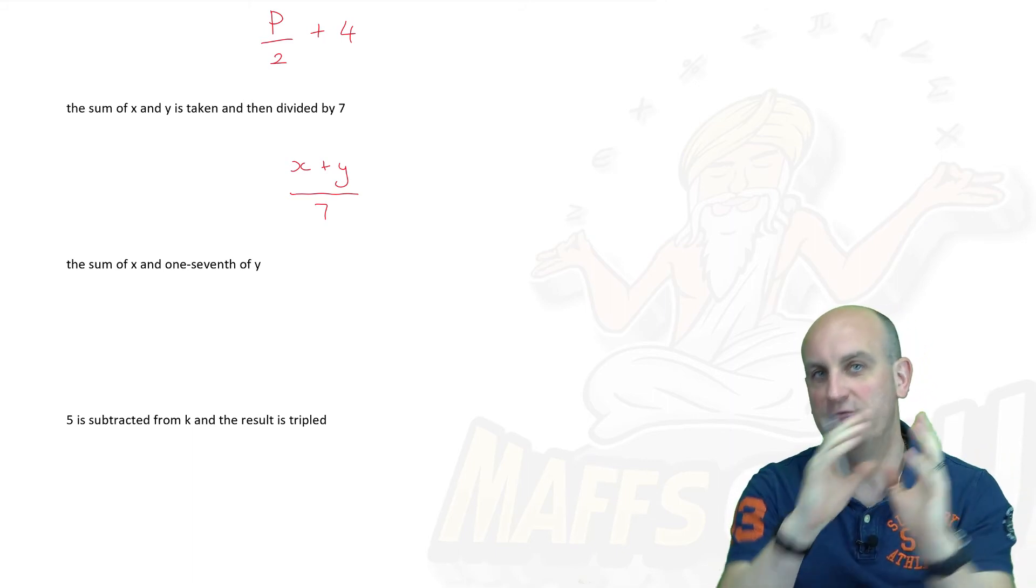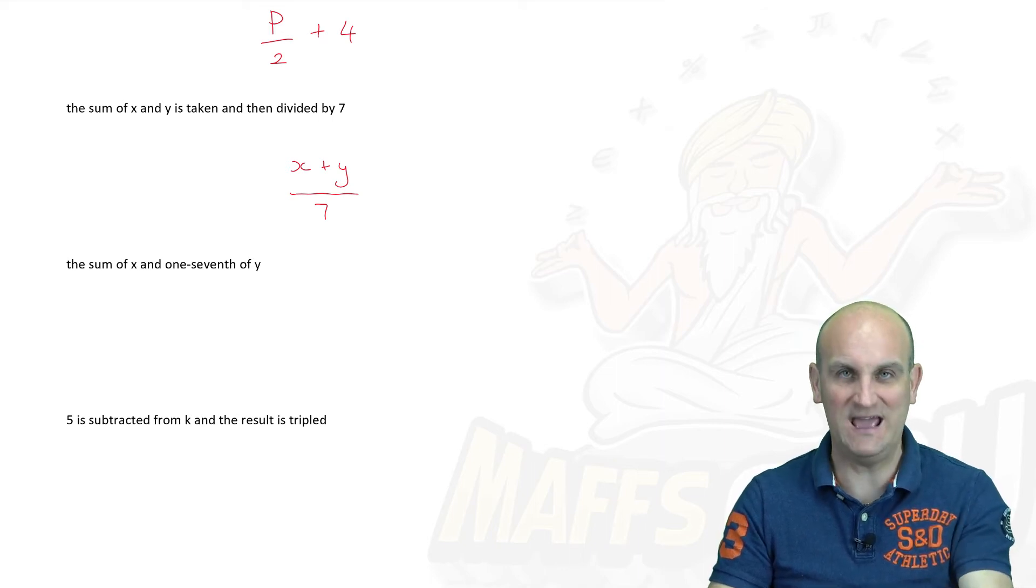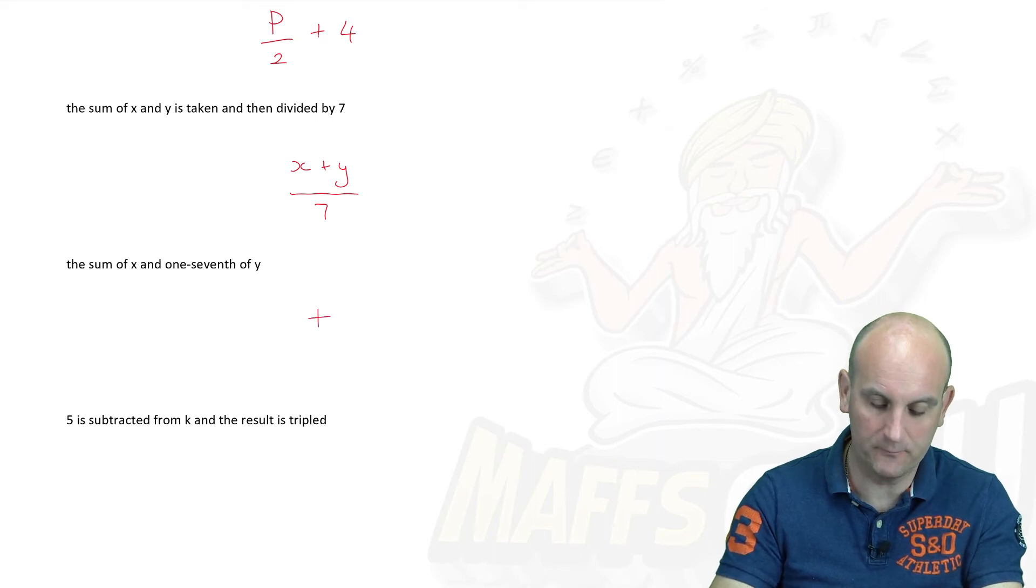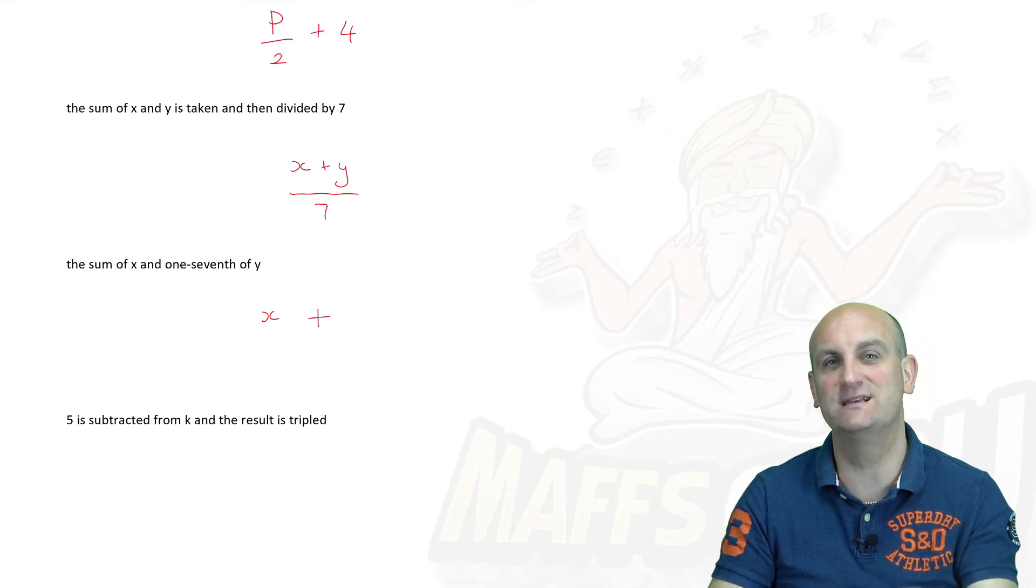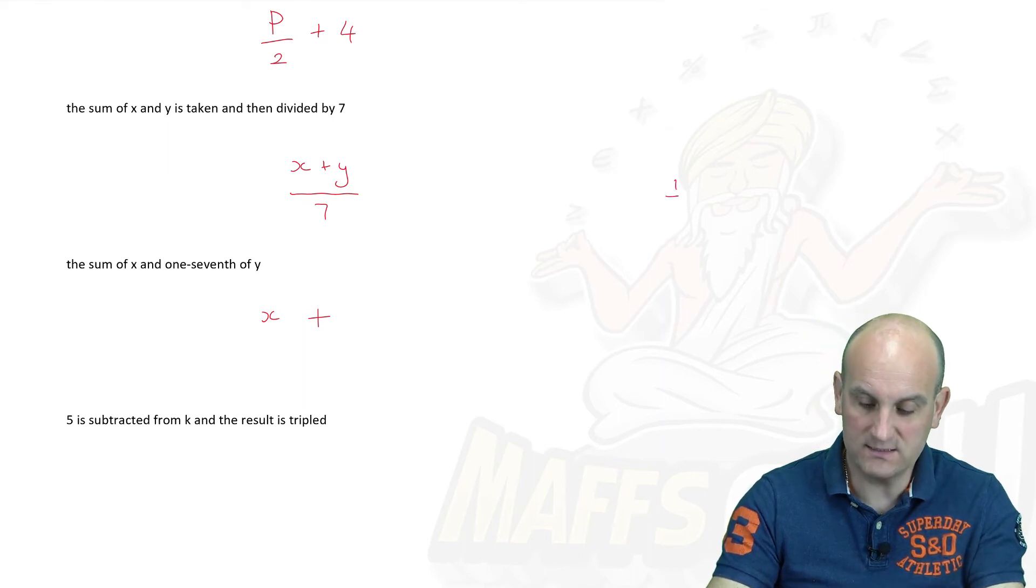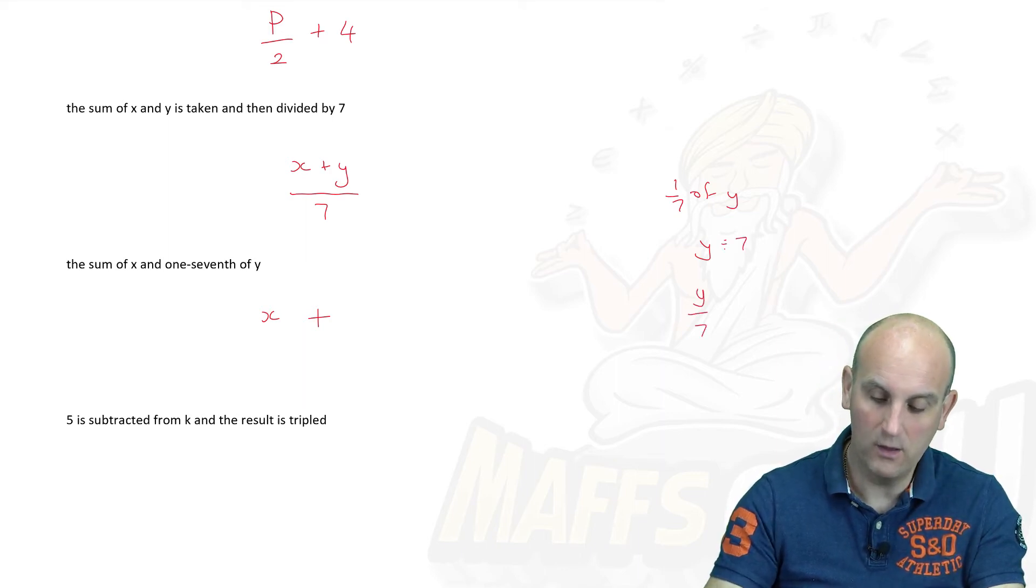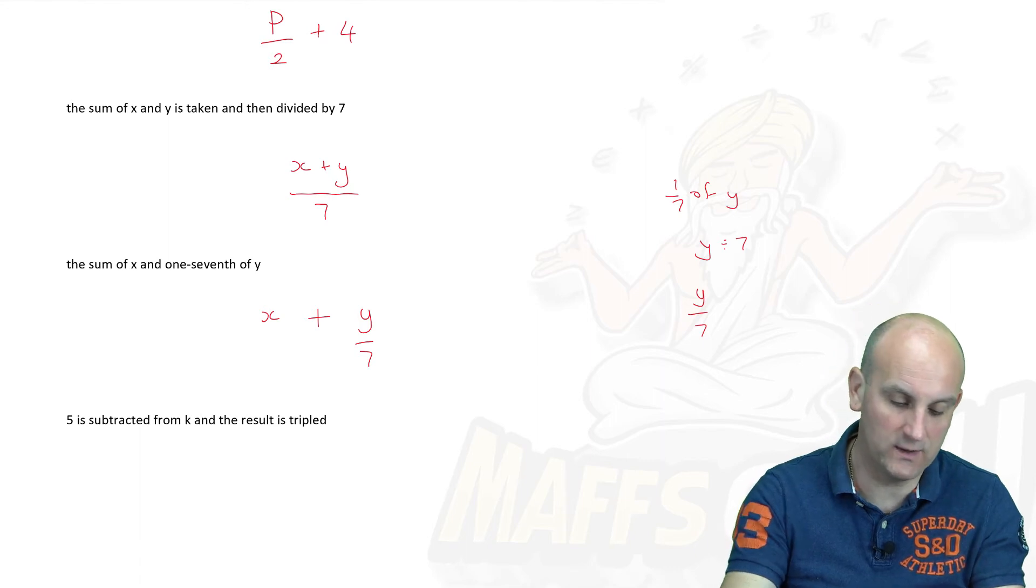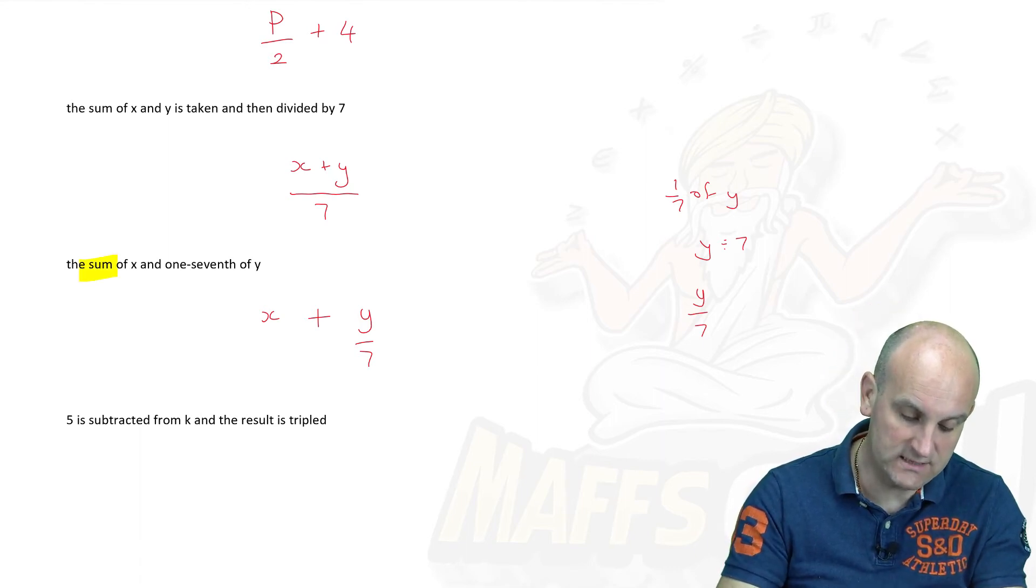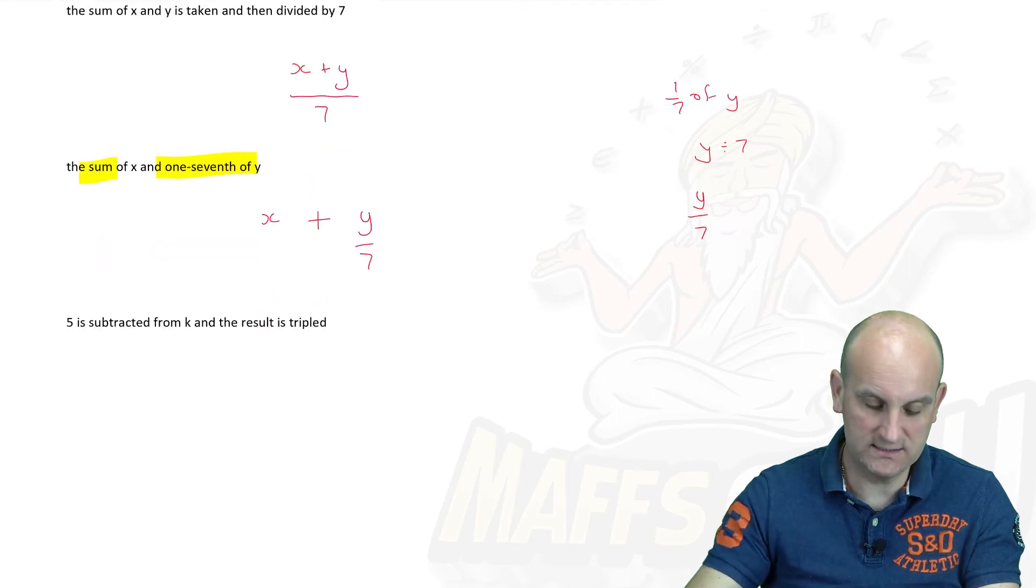The sum of X and 1 7th of Y. Sum of X. Well, there we go. Sum of X and 1 7th of Y. Well, 1 7th is the same as Y divided by 7. So 1 7th of Y is the same as Y divided by 7. But we can't write that. So we have to write Y on 7. Now, why am I not dividing all of that by 7? Because the question quite clearly said we are going to do the sum of X and it's only the Y that is divided by 7. All of these questions take some sort of practice.